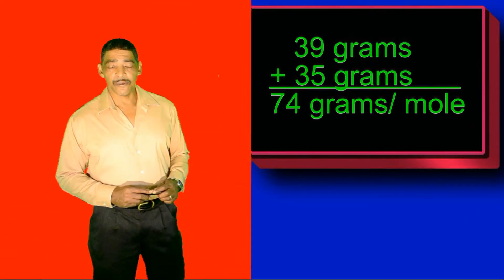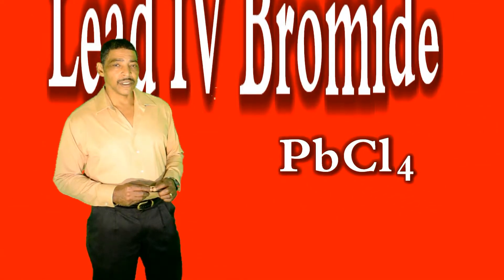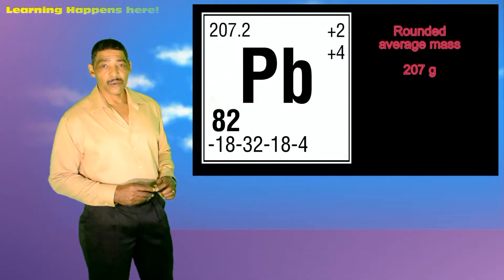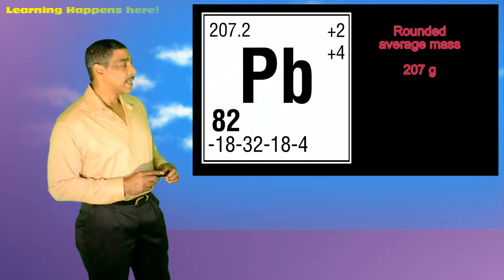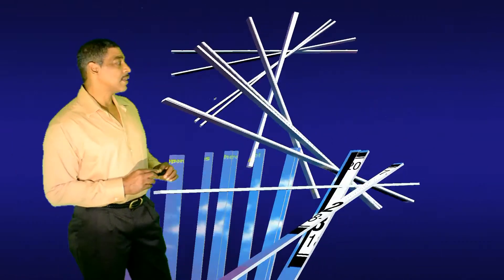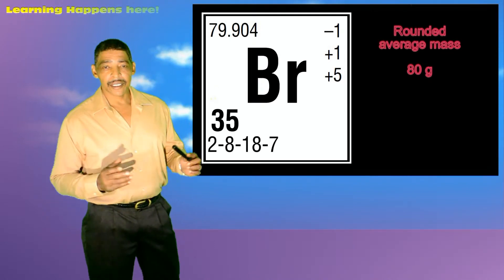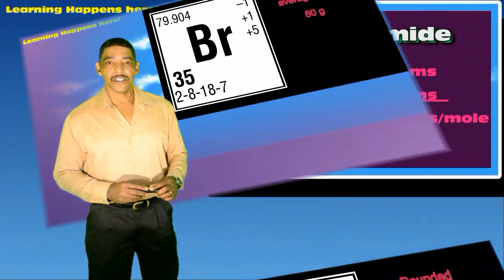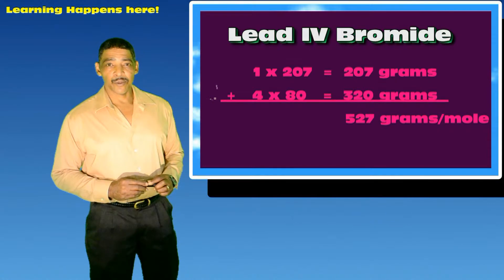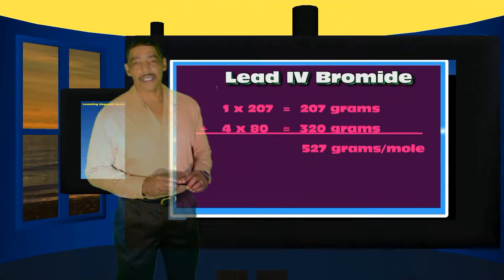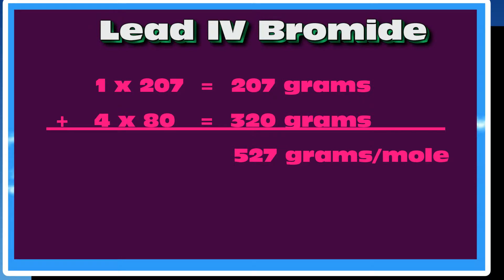For the compound lead(IV) bromide, which has a ratio of atoms that is 1 to 4, the average atomic mass for lead on the periodic table is listed at 207.2, which may be rounded to 207. The average mass for bromine is listed at 79.904, which may be rounded to 80. To determine the GFM of lead(IV) bromide, we simply add 207 plus 4 times 80, which is 320. Therefore, 207 plus 320 equals 527 grams per mole.